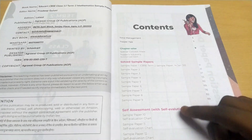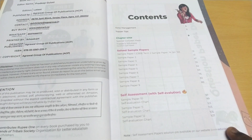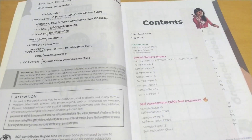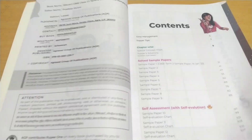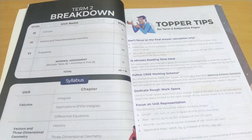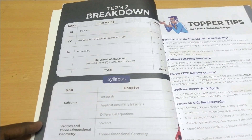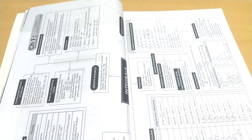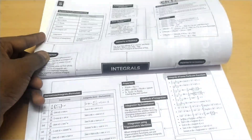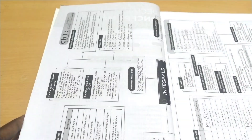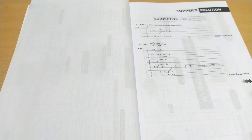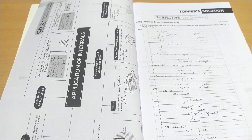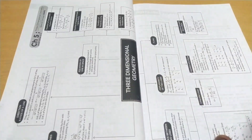In the contents, they give 9 solved sample papers and 3 extra self-assessment sample papers with a self-assessment sheet. First they give question paper design, time management, Term 2 breakdown with syllabus, topper tips, and self-evaluation chart. In the summary part they give all formulas, important notes, and the topper solution for each chapter — which is a big plus point for Mathematics.